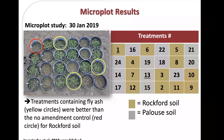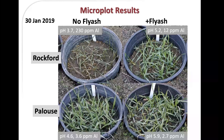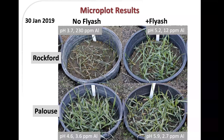In the Pullman soil, there was not much effect of fly ash. In these microplot studies, when we added fly ash to the Rockford soil, we went from a pH of 3.7 to 5.2, and aluminum concentration went from 230 ppm to 12 ppm, with significant improvement in wheat stand and health. In the Palouse soil, we saw a similar pH increase with fly ash addition and a slight decrease in available aluminum, but not much visible difference in plant health.